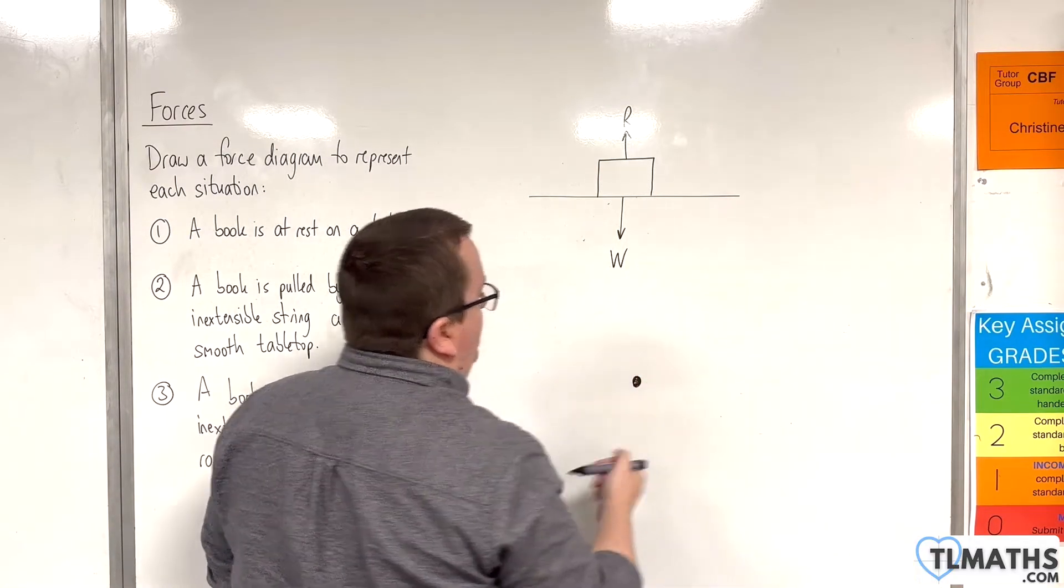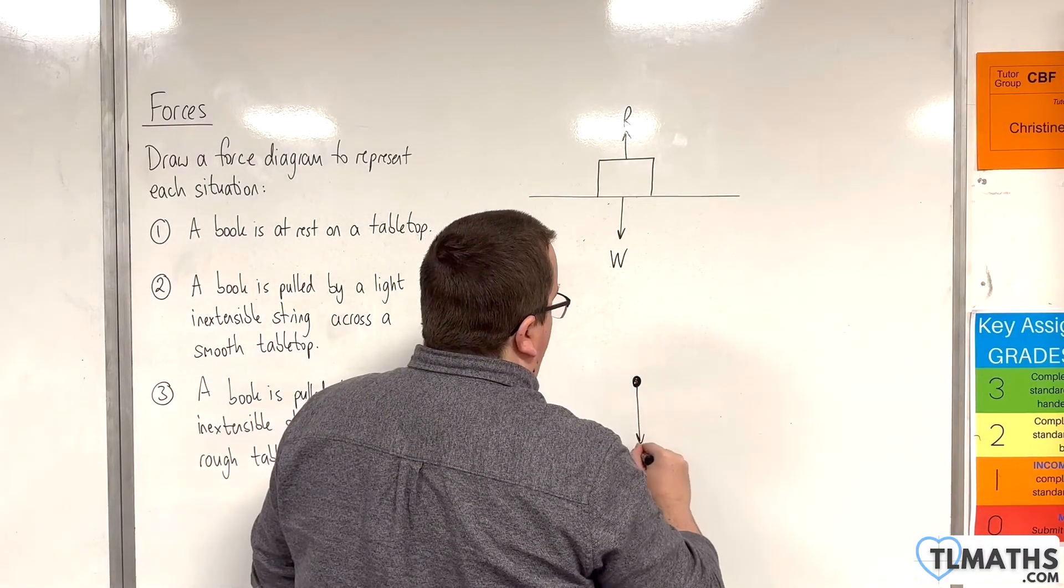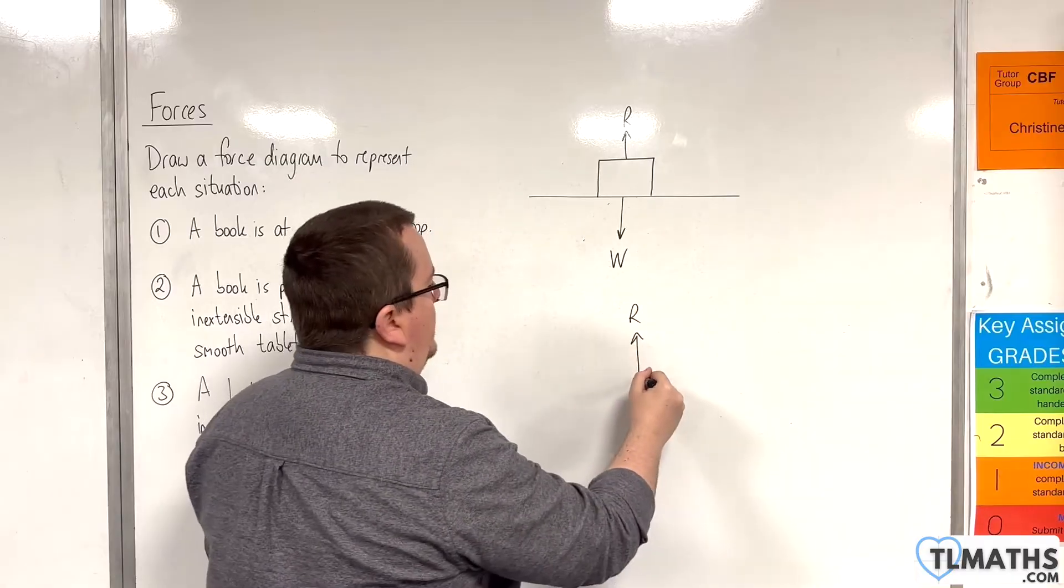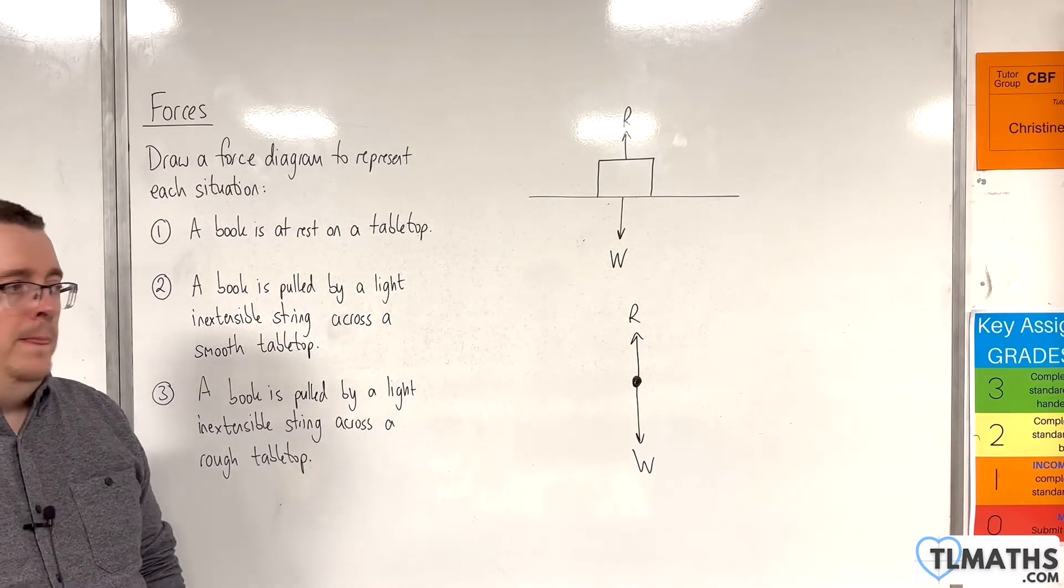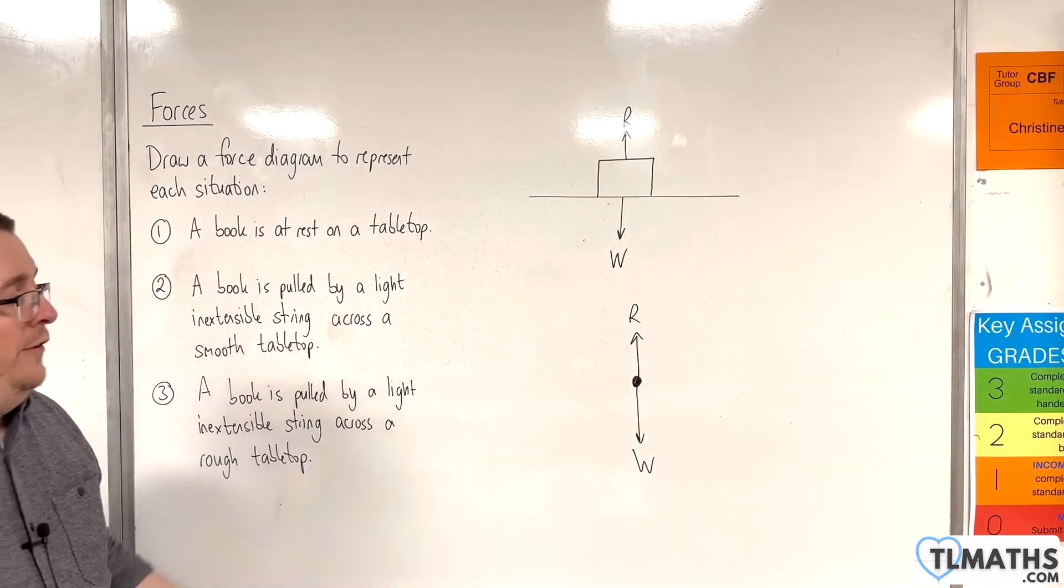But you will see some force diagrams that are just drawn like this. The book is represented as a particle and you have the weight acting vertically downwards and you have the normal reaction force acting vertically upwards. And that is my force diagram. So it's a little bit minimalist, but that's all I would need.